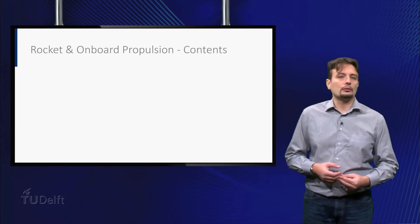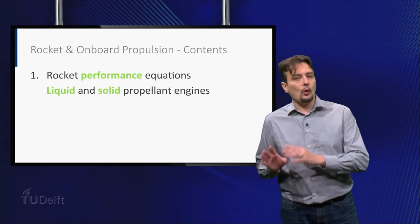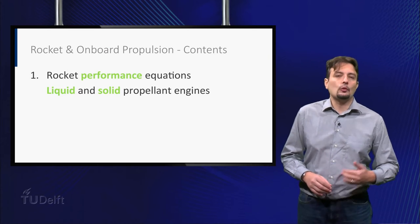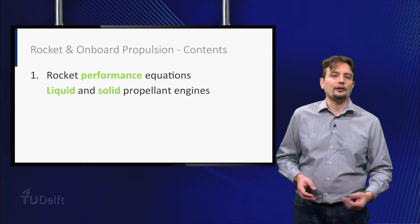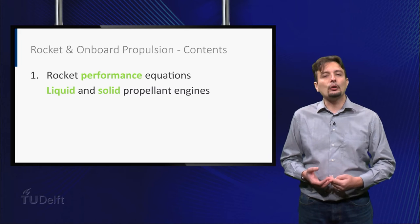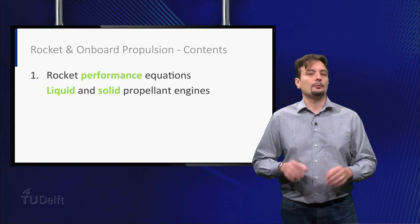This part of the course is divided in three chapters. In chapter 1, we will discuss the main equations used to characterize the performance of a rocket or propulsion system, and we will take a closer look at liquid and solid propellant engines.